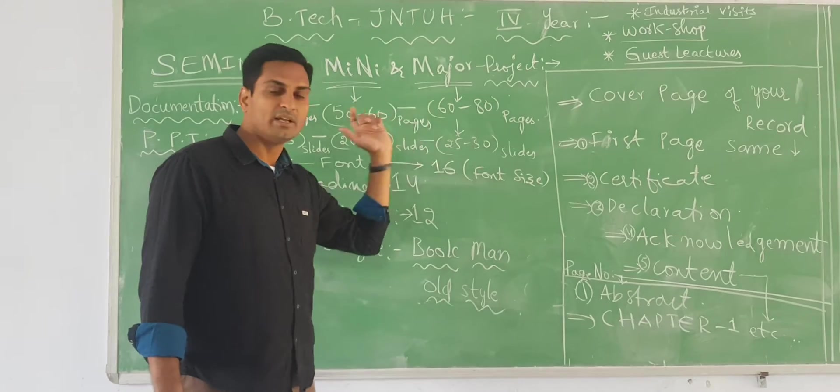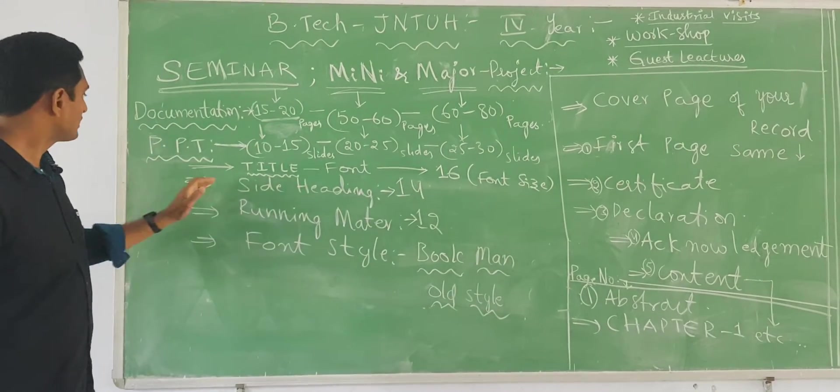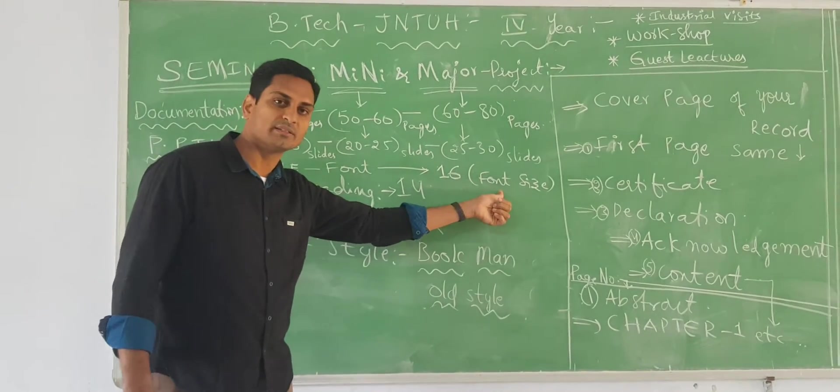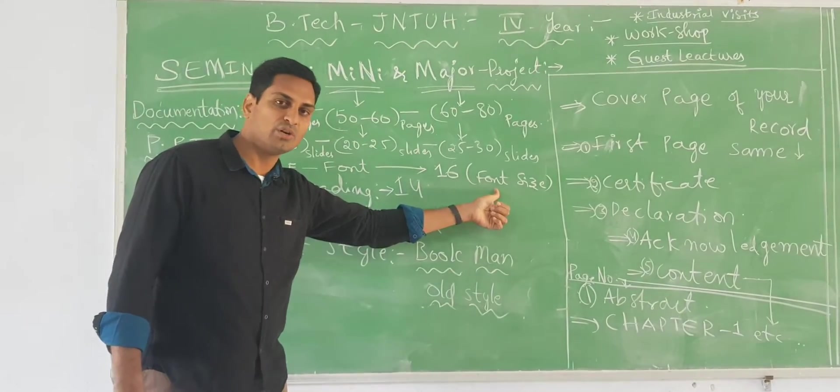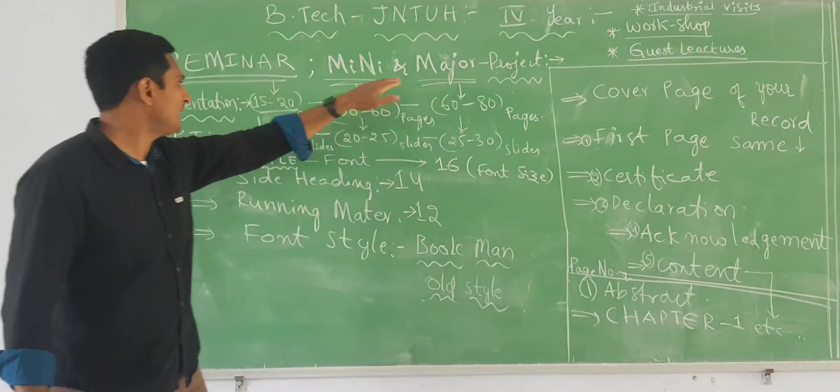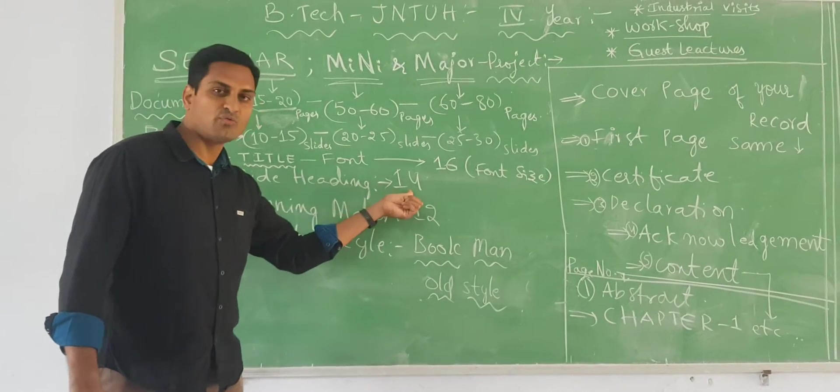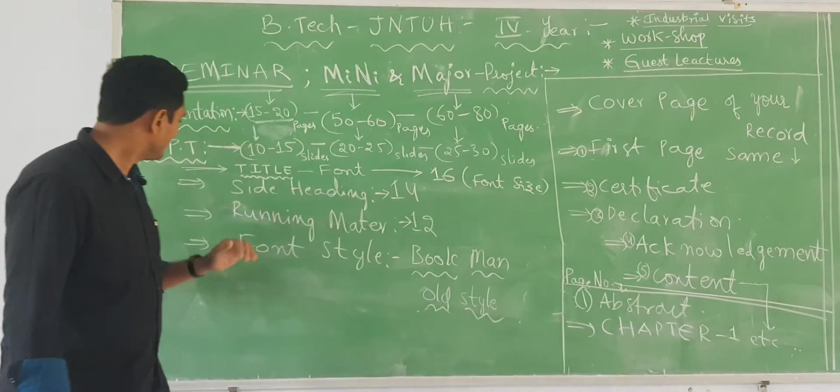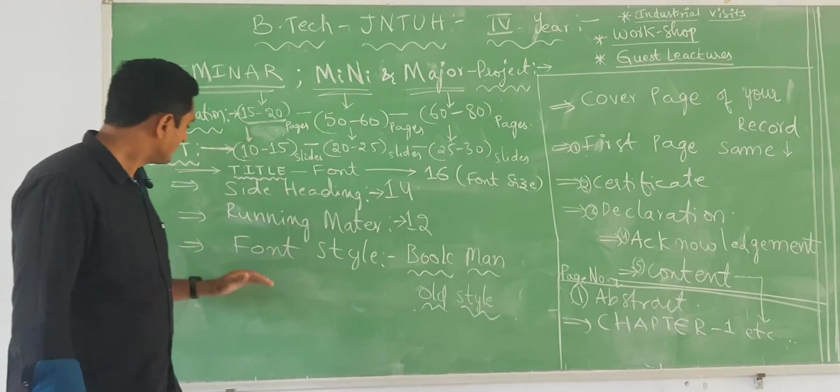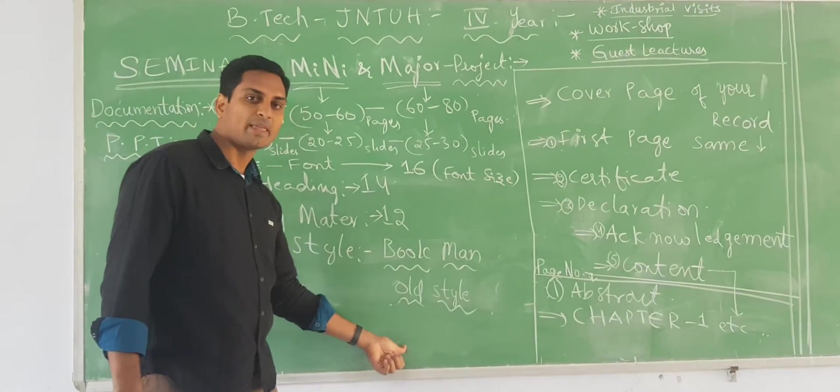Now we are going to do that comparison as well as detailed information. Now coming to title, title font should be around 16 font size. In the last video also I told you same thing, but this three things: seminar, mini and major projects. And side heading should be around 14 font size. And running matter the content should be 12. The font style can be Bookman Old Style.